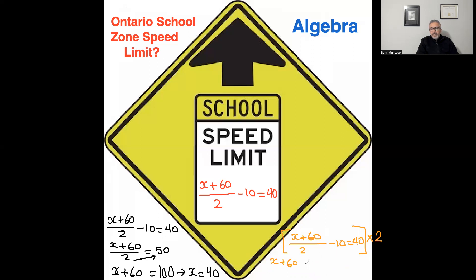2 times 10 is 20, so minus 20. 2 times 40 is 80. So 80 minus 40 equals 40, and therefore x equals 40, and 40 is the school zone speed limit in Ontario.